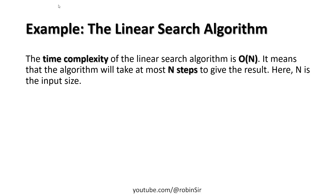The best case for linear search is when the element you are searching for is at the very first index (index 0) — you compare the first element and find it immediately. For the average case, you run the program several times searching for random elements, find the time complexity for each instance, and then average them.